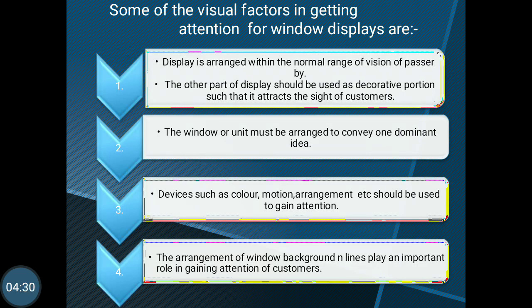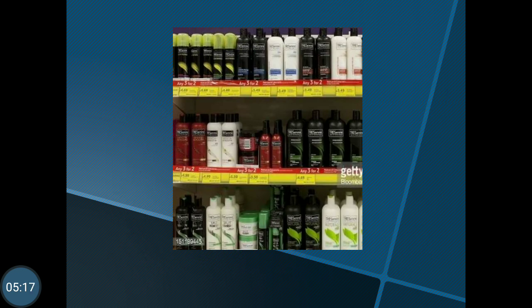Some of the visual factors in getting attention for window displays are: the display is arranged within the normal range of vision of passers-by, the other parts of the display should be used as decorative portions to attract the sight of customers, the window or unit must be arranged to convey one dominant idea, and devices such as color, motion, and arrangement should be used to gain attention. The arrangement of the window background and lines plays an important role in gaining the attention of customers.